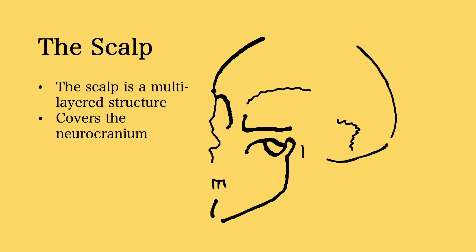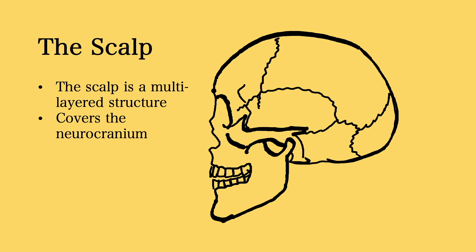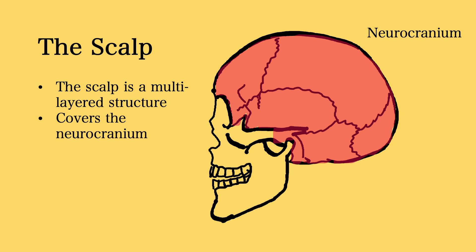The scalp is a multi-layered structure that covers the neurocranium. The human skull is broadly divided into two parts: the neurocranium and the viscerocranium. The neurocranium is the upper and back part of the skull that protects the human brain, and is also sometimes called the brain case. In contrast, the viscerocranium refers to the collection of bones that make up the facial skeleton.